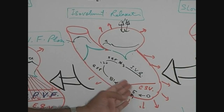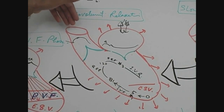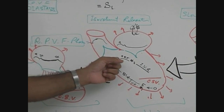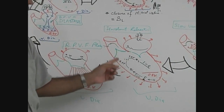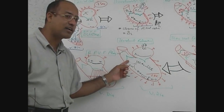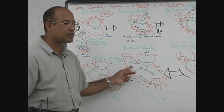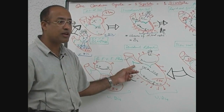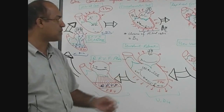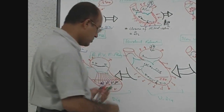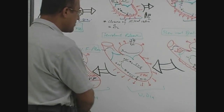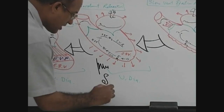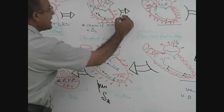When intraventricular pressure rapidly drops, blood in the aorta tries to come back, closing the aortic valve. On the right side of the heart, the pulmonary valve closes simultaneously. The closure of the aortic valve and pulmonary valve produces a sound — that is S2.